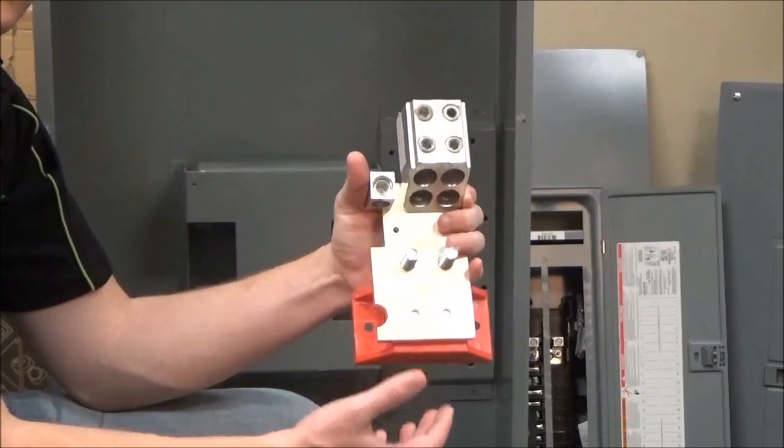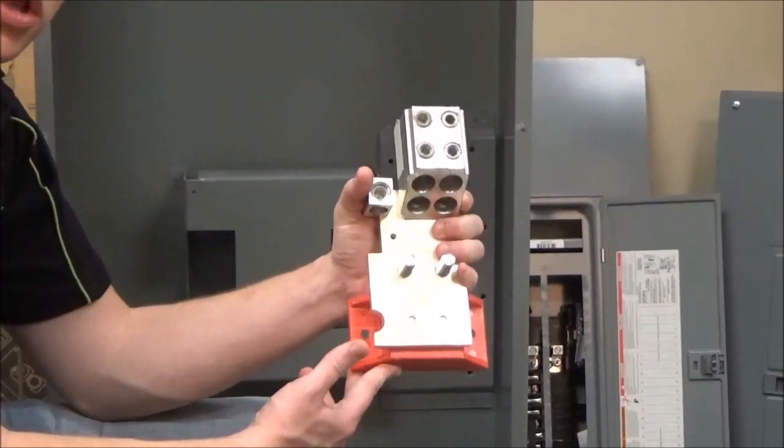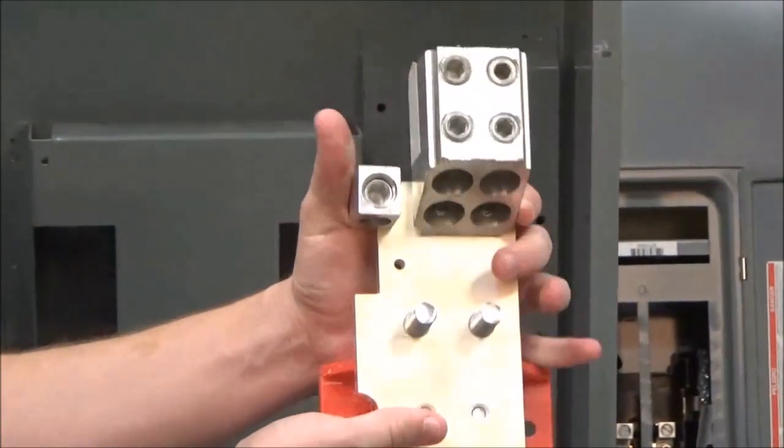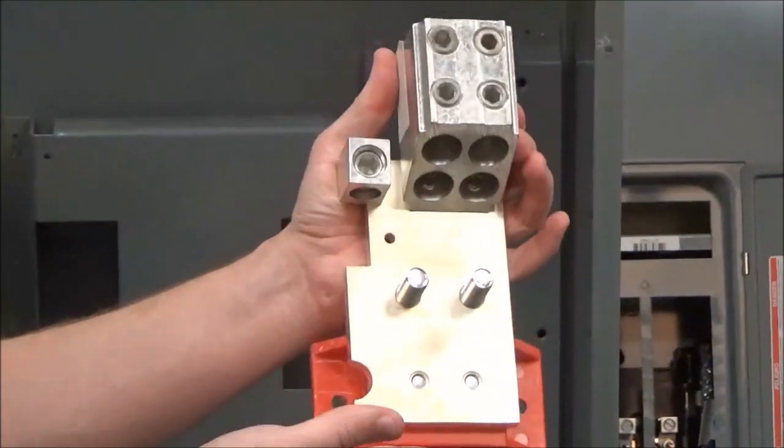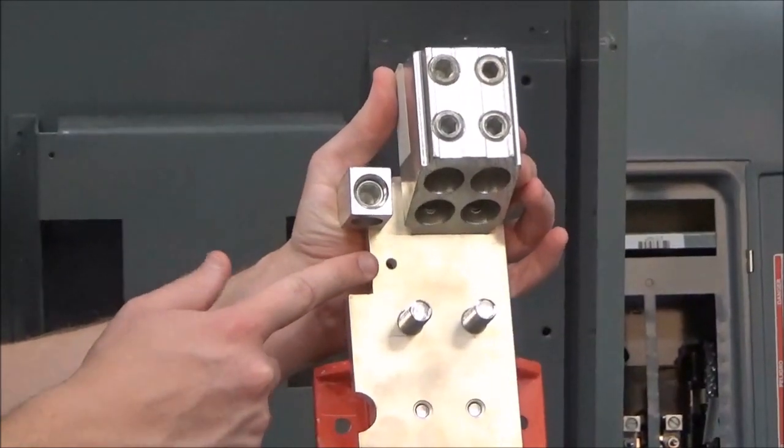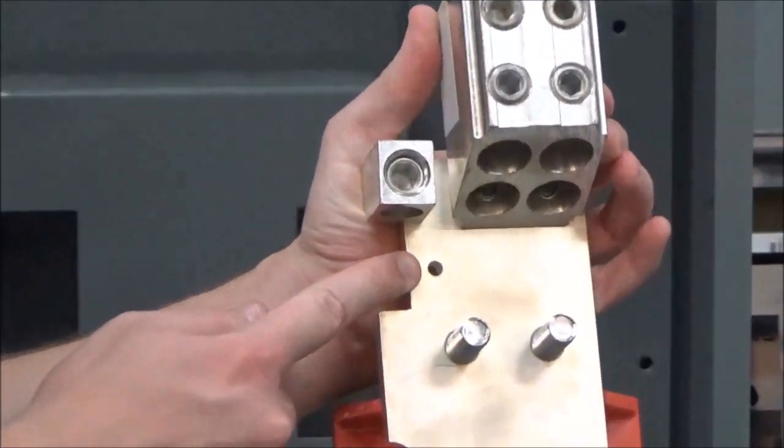For NEMA 1 and NEMA 3R enclosures, like the one that we are using today, the top piece will be this piece that has the neutral lug and bonding hole on the left side.